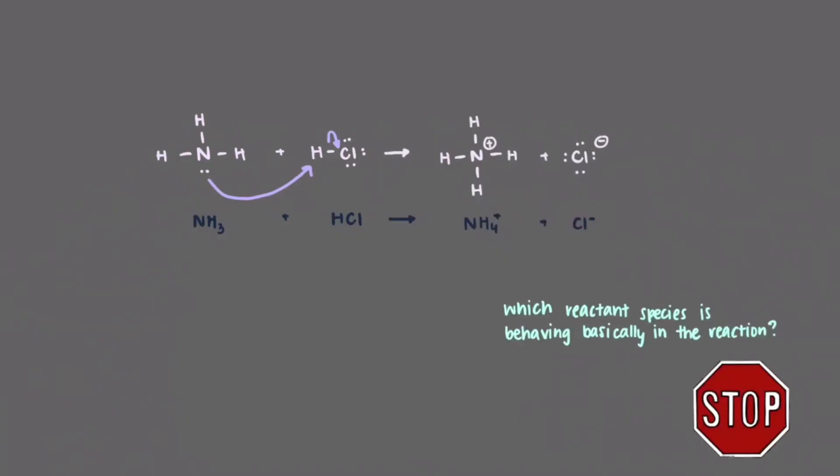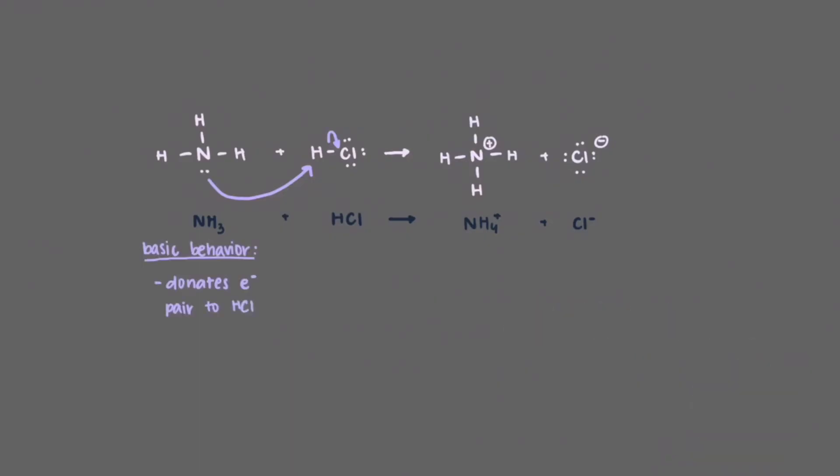Which reactant species is behaving basically in the reaction? That's right. Ammonia is donating an electron pair to hydrogen chloride in this reaction, which means that it is acting basically.